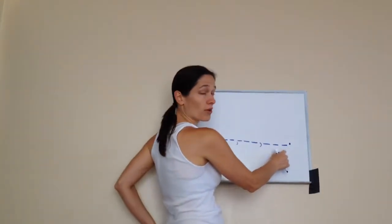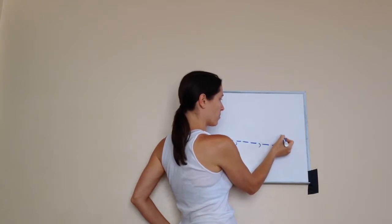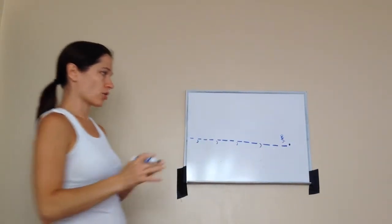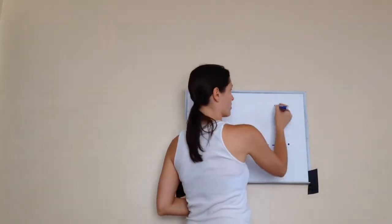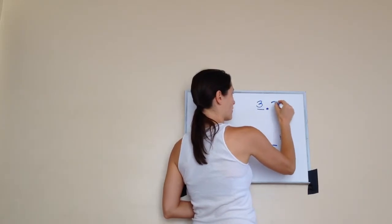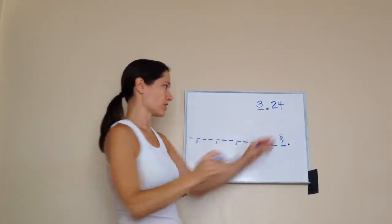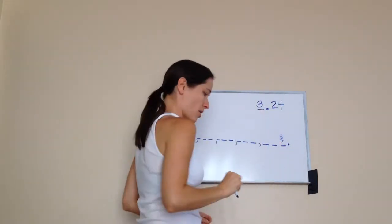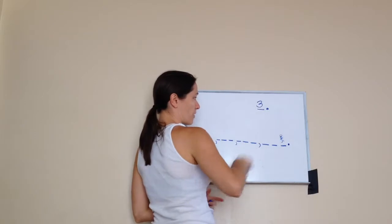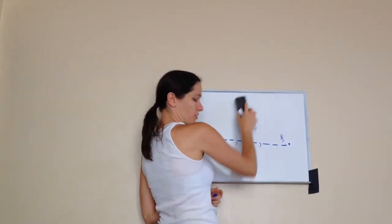Do you remember what this one is called? The ones. Yes, this is the ones place, and that starts us off. If you're looking at money, for example, how many dollar bills would I have? Three one-dollar bills in 24 cents, which is after the decimal. But we're not looking at after the decimal today, we're looking at before the decimal. So the first place is the ones.